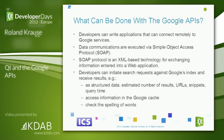Developers can write applications that connect remotely to Google services using our Qt library. Data communications are executed with the SOAP protocol — the Simple Object Access Protocol — an XML-based technology used to exchange information entered into web applications. Developers can initiate search requests against Google's index and receive structured results such as estimated number of results, URLs, snippets, query times, and more. They can also access the Google cache or check spelling.